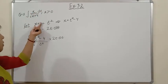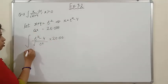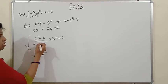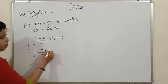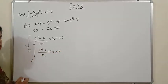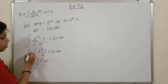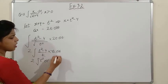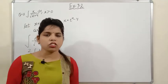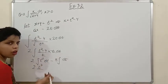After substitution, taking 2 outside as a constant, we get 2∫(t² − 4)/t · t dt. The t in the denominator cancels with the t from dt, giving us 2∫(t² − 4) dt. Separating: 2∫t² dt − 8∫dt. The integration of t² using x^n formula gives t³/3, and the integral of 1 dt gives t.